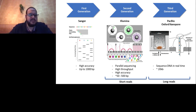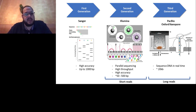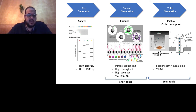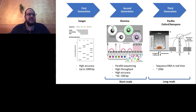Third generation sequencing, such as PacBio and Oxford Nanopore, sequences DNA in real time with no amplification, and read lengths reach on average 20 Kb. Sequencing can also be classified into short reads and long reads. Long reads added a lot to the field by enhancing genome assembly and identification of structural variants based on their increased read lengths.